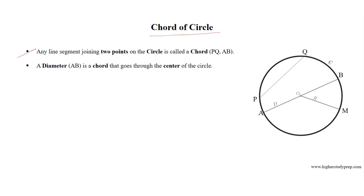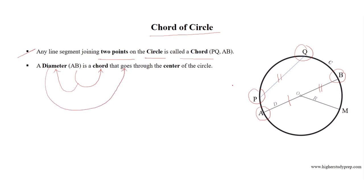Chord of a circle. Any line segment joining two points on the circle is called a chord. For example, PQ and AB are two chords of the circle. PQ is the line segment joining points P and Q on the circle, while AB joins points A and B. AB is not only a chord but also a diameter because it passes through the center. PQ is only a chord, not passing through the center.